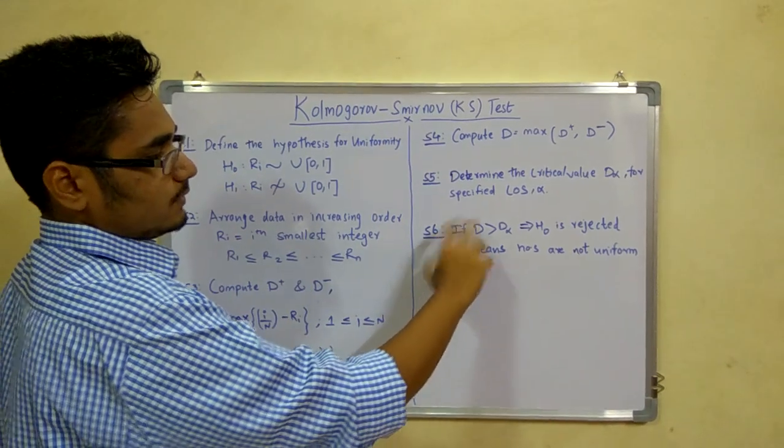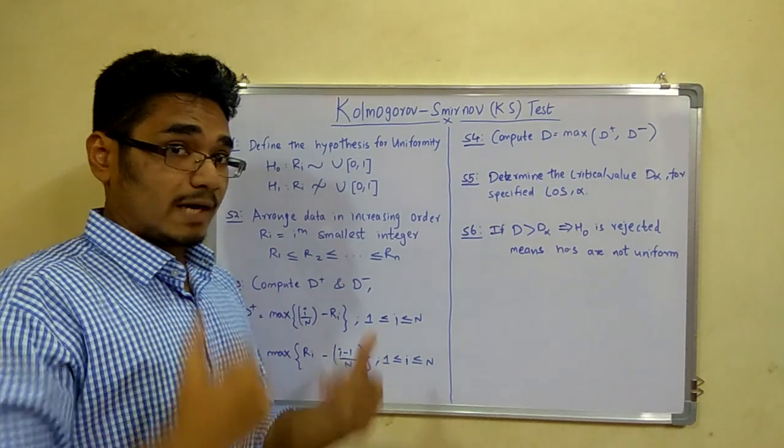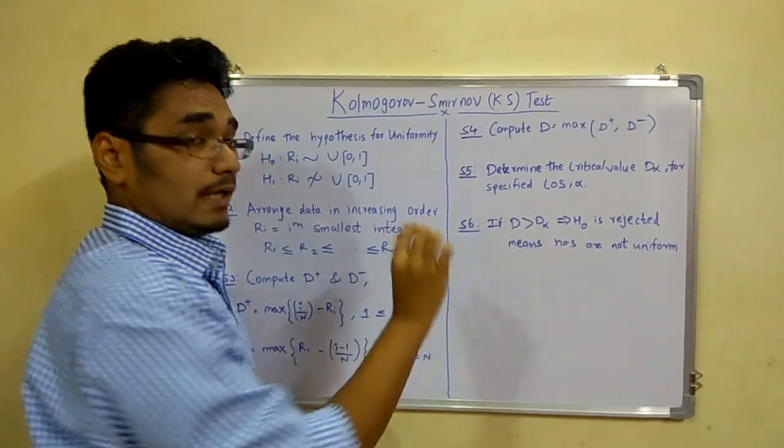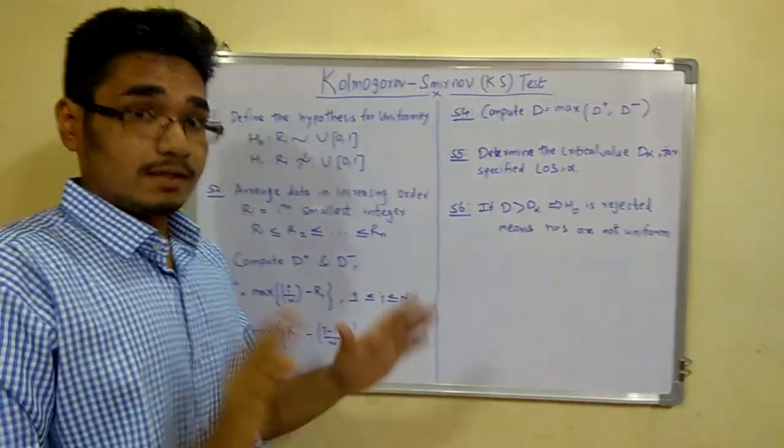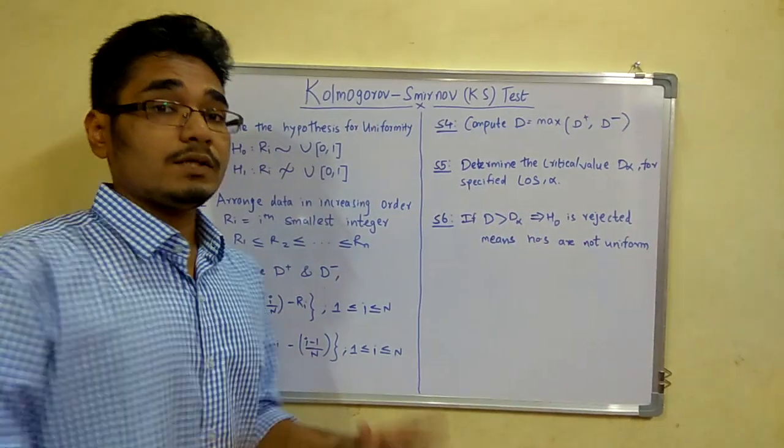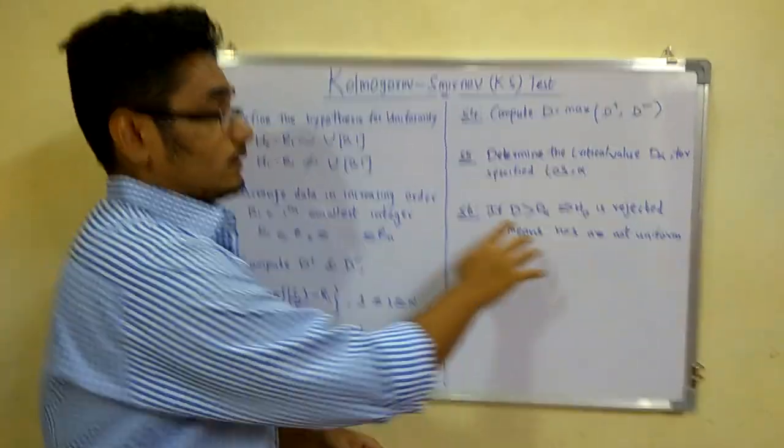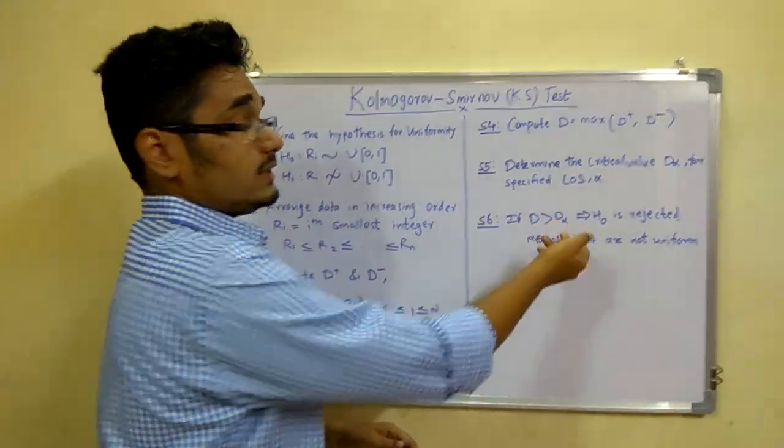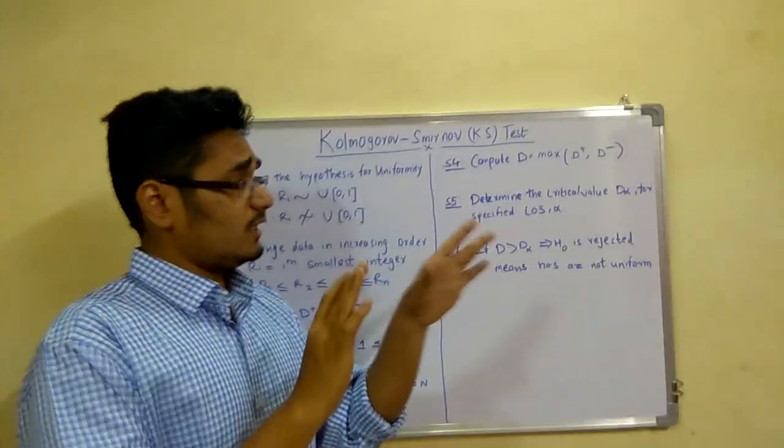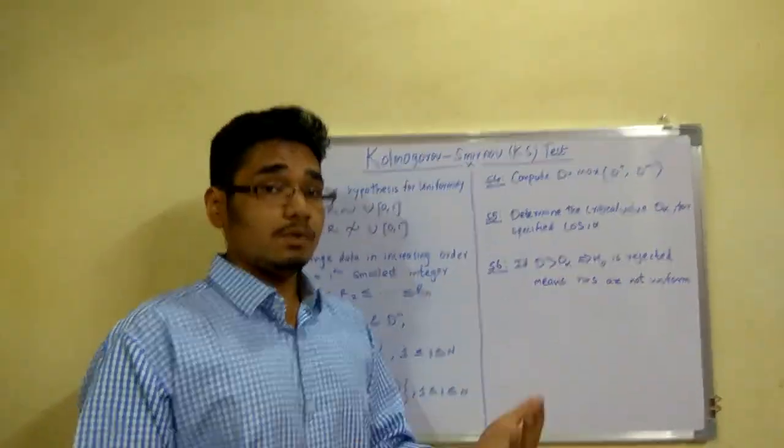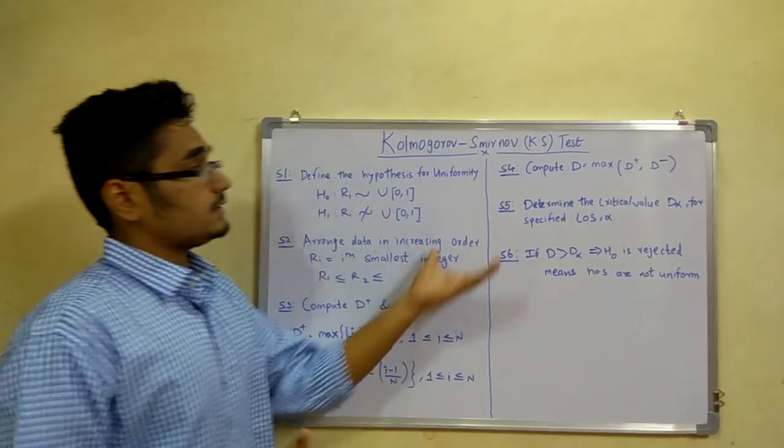The final step is to compare the computed D value with D_alpha from the statistical table. If the computed D is greater than D_alpha, the threshold for the level of significance, then hypothesis H0 is rejected, meaning the numbers are not uniform. Otherwise, if D is less than D_alpha, then H0 is accepted, meaning the numbers are uniform and we accept this test.